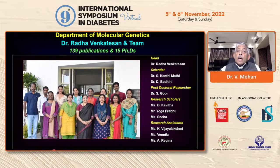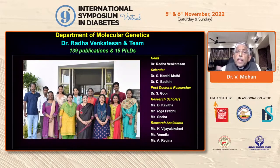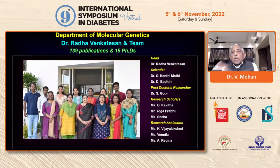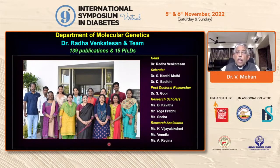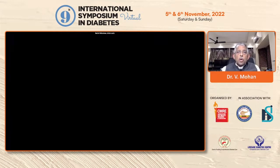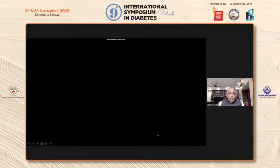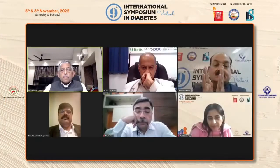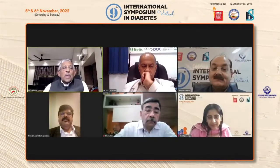All this is possible because of a huge team. Our genetics team, headed by Dr. Radha Venkatesan, alone has 139 publications on the genomics of diabetes in various forms, and 15 PhDs have already been completed. I'm very proud of this particular team who work very closely with the clinical team. From the lab to the clinic and from the clinic to the lab — this unique integration has helped to change the lives of children with monogenic diabetes. Thank you very much.